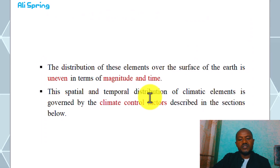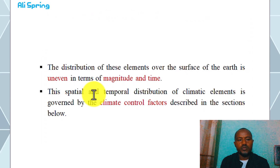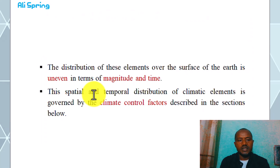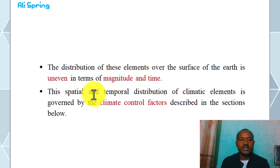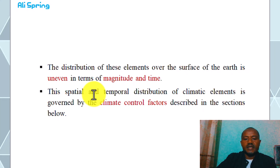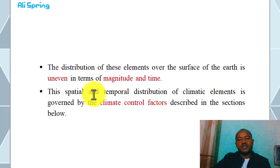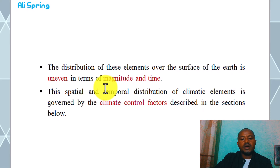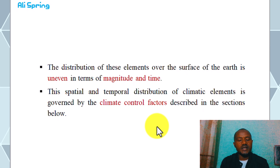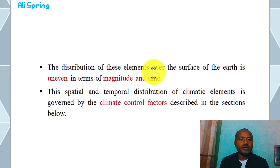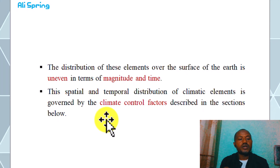The distribution of these elements over the surface is uneven in terms of magnitude and time. The spatial and temporal distribution of climate elements is governed by climate control factors, described as control factors. There are factors or controls of weather and climate.